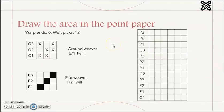First, we need to draw the area in the point paper. For the warp end is 6: 1, 2, 3, 4, 5, 6, and the weft pick is 12.